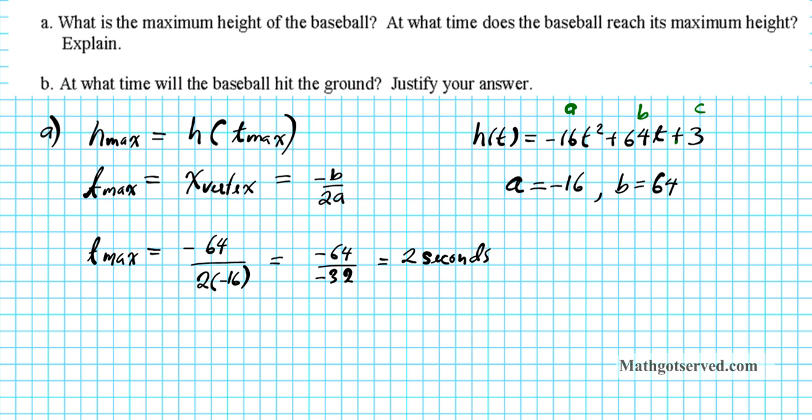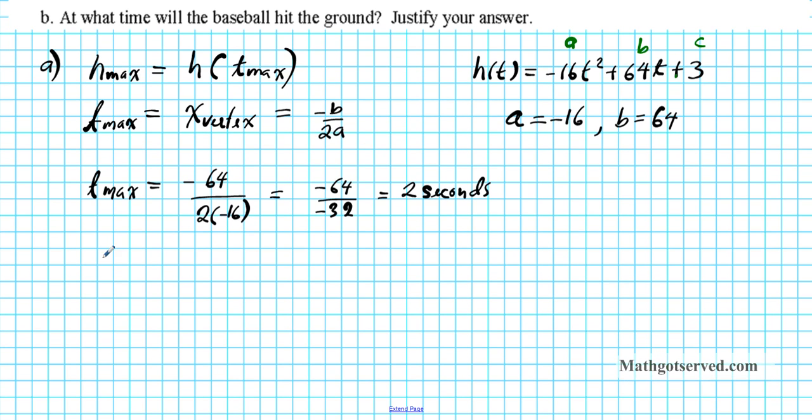But we want to look for the maximum height also. What was the value of that maximum height? So that's h max. h max is h of t max. So what is t max here? t max is 2 seconds. So we're going to evaluate the function at t equals 2. So that simply means wherever you have a t in this equation right here, you substitute 2. So you're going to have negative 16 times 2 squared plus 64 times 2 plus 3.